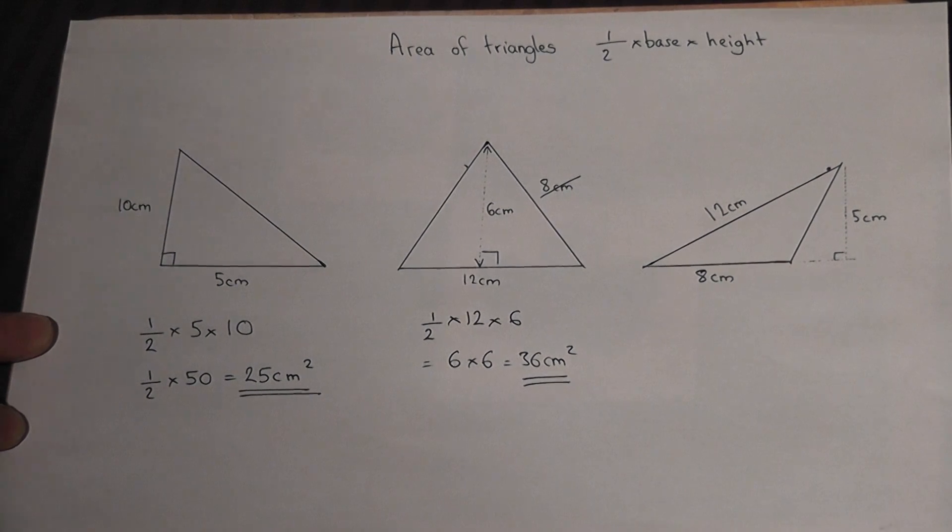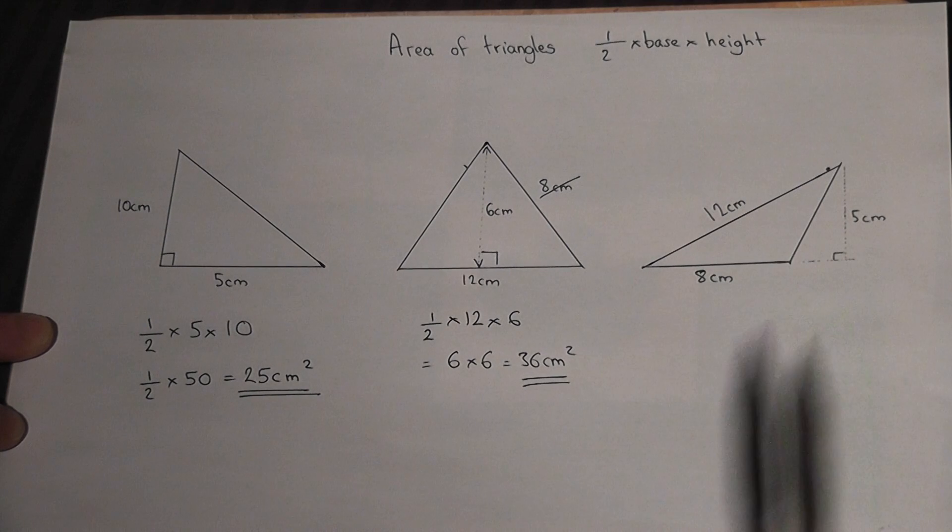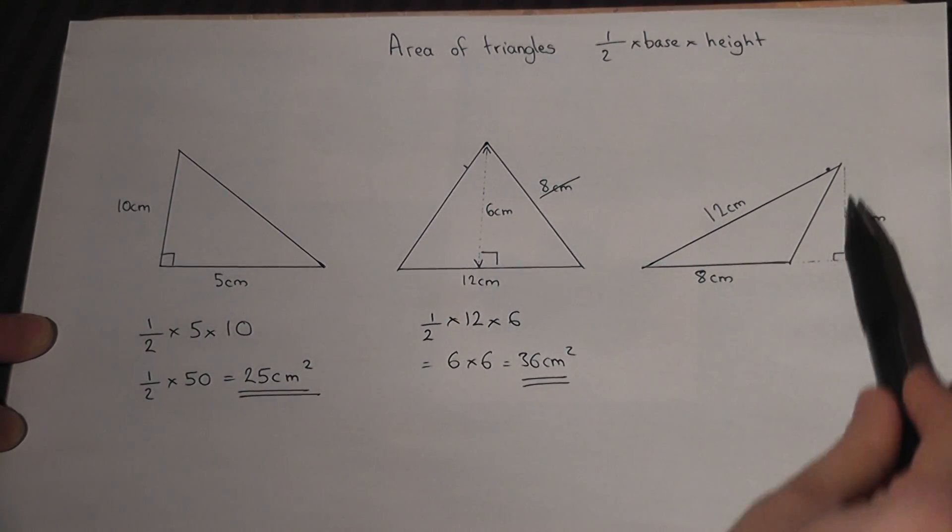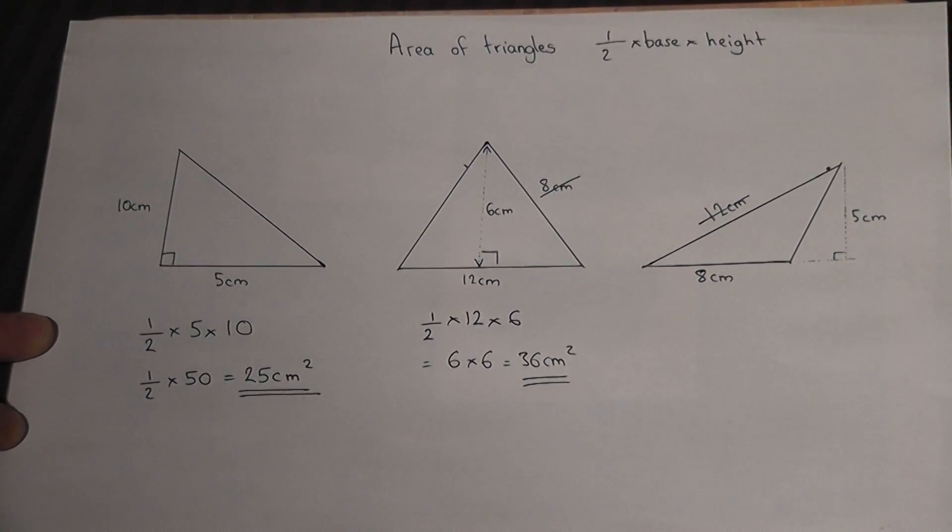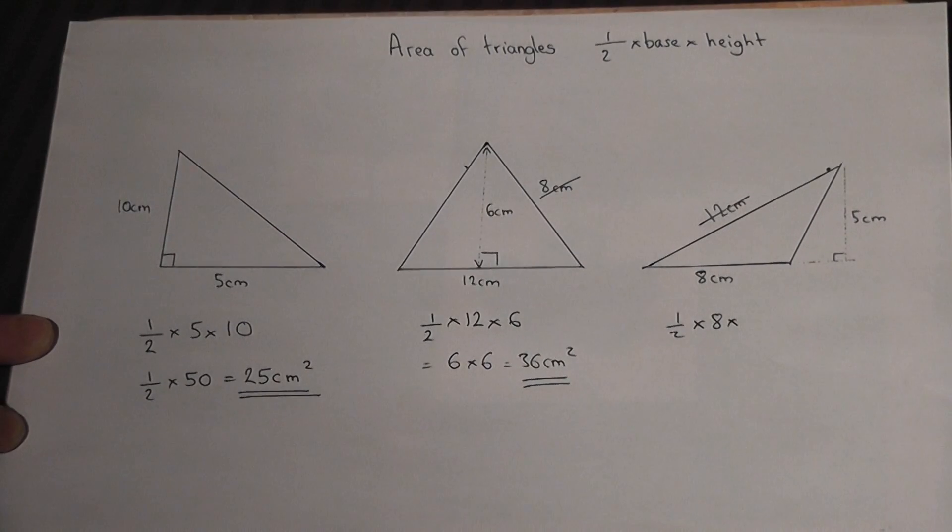Now in the third example, again we're given three measurements, and it's always the base and the perpendicular height, which is over here, and the 12 is irrelevant for this calculation. So it's a half times the base times the height.